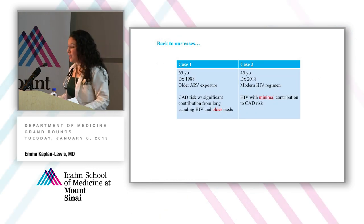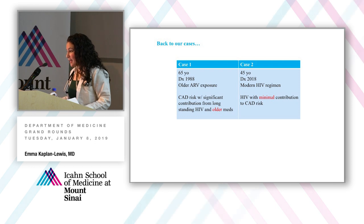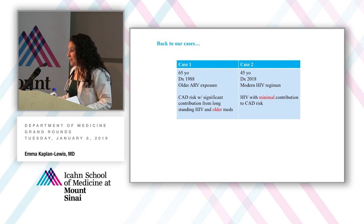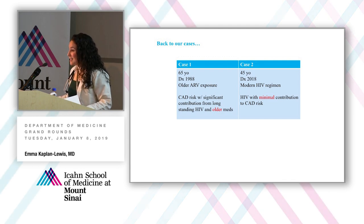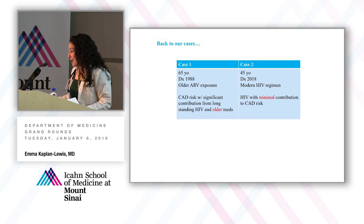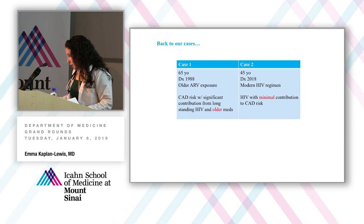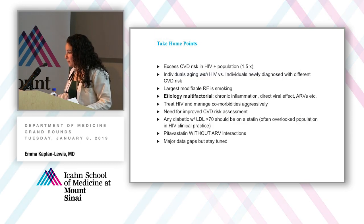Back to our cases. Case one — the 65-year-old diagnosed in the 1980s with older ARV exposure — based on his low nadir CD4 counts, unchecked viral replication, and exposure to older medications, both the HIV and the therapy are really contributing to his cardiac risk. In contrast, case two — representing the modern HIV epidemic, diagnosed recently and started immediately on treatment — the HIV likely plays a negligible role in his coronary risk. Understanding where your patient falls in this spectrum is important.